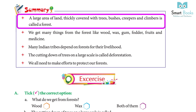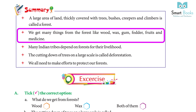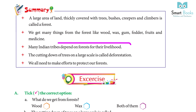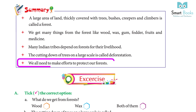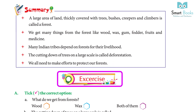Summary: A large area of land thickly covered with trees, bushes, creepers, and climbers is called a forest. We get many things from the forest like wood, wax, gum, fodder, fruits, and medicines. Many Indian tribes depend on the forest for their livelihood. The cutting down of trees on a large scale is called deforestation. We all need to make efforts to protect our forests.